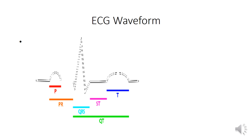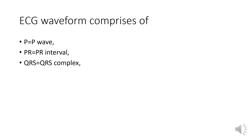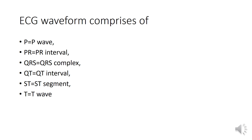Let us see the ECG waveform. This is the ECG waveform representation. The ECG waveform comprises of P wave, PR interval, QRS complex, QT interval, ST segment, and T wave.